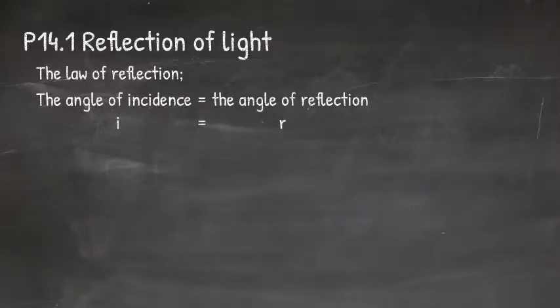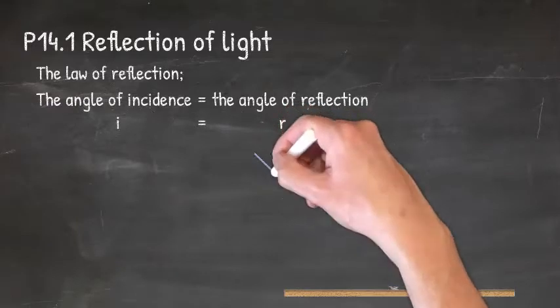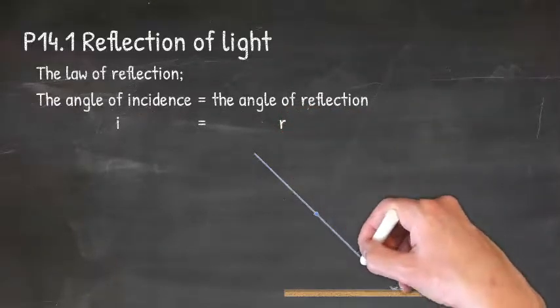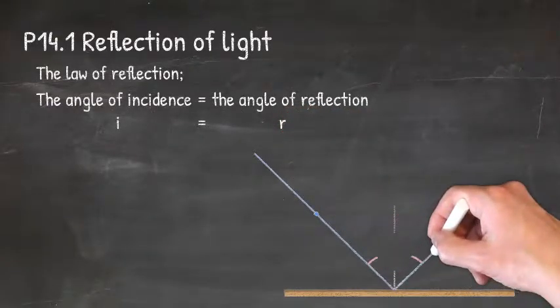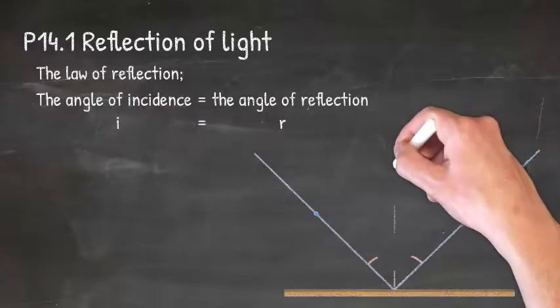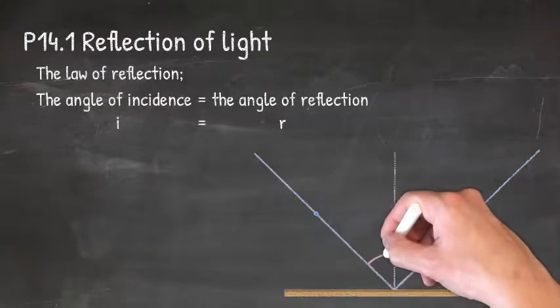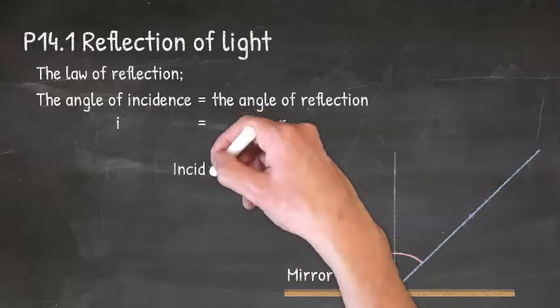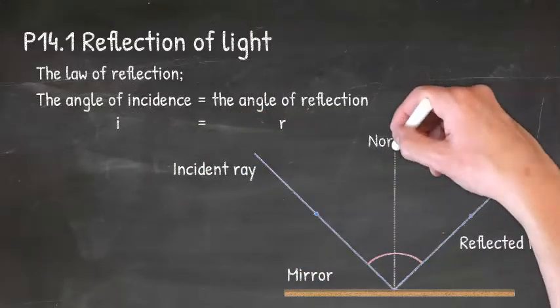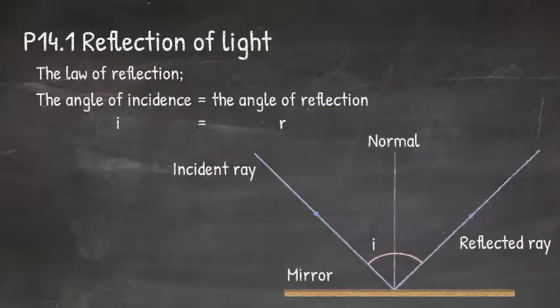If you look at this diagram, there is a mirror with an incident ray coming from the left which is being reflected, shown by the ray to the right. Importantly, there is a normal that intersects the mirror at 90 degrees. The incident angle is the angle between the normal and the incident ray. The reflected angle is the angle between the reflected ray and the normal.